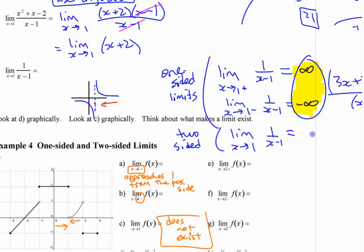The two sides are not the same, so this is, I mean, you could say undefined, but they usually say does not exist. I don't know why they say that. The limit does not exist. The limit does not exist because the two sides are different.